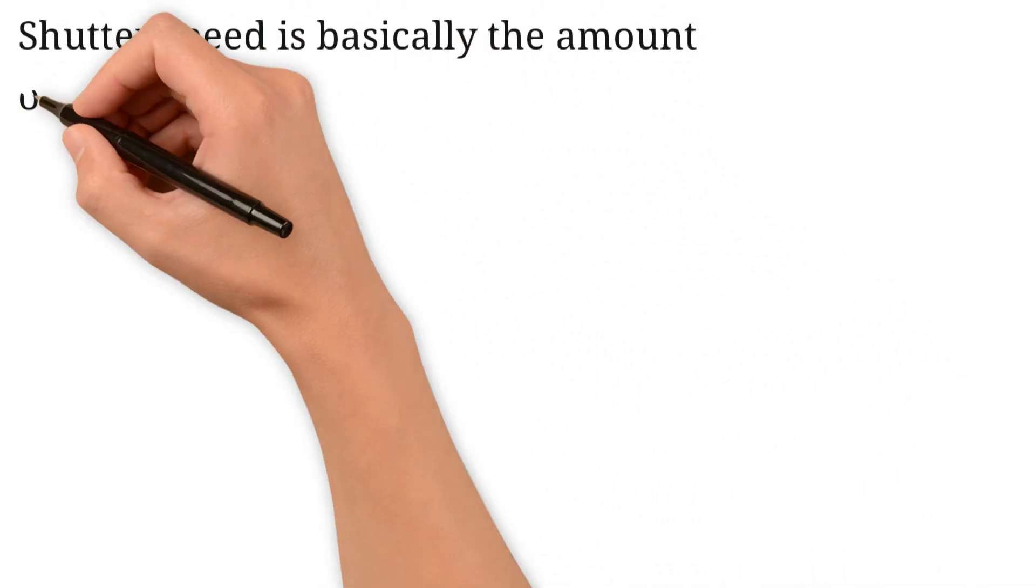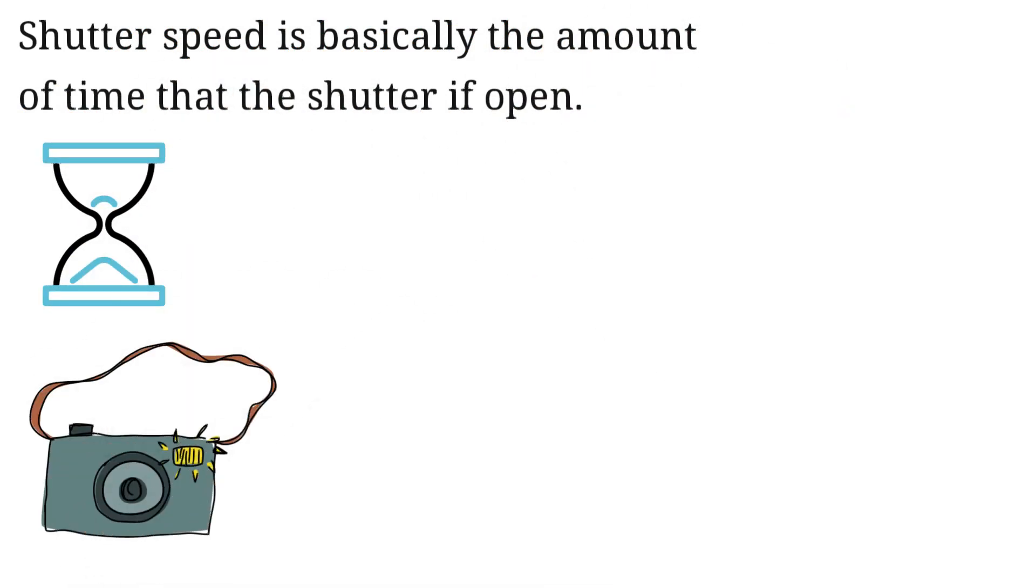Shutter speed is basically the amount of time that the shutter is open. Basically, it means how much time does your camera spend taking that picture. The longer it takes, the more blurred the photo will be.